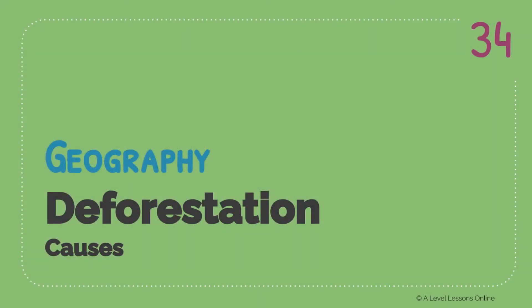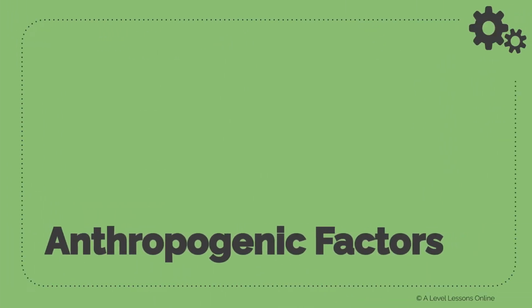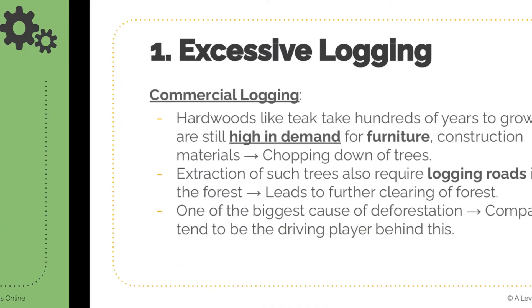Welcome back to A-level lessons. In this video we're going to be looking at deforestation. It's a three-part series looking at physical geography under Theme 1.2, covering the causes, effects, and strategies of deforestation. In this part, we look at the factors or causes of deforestation in today's society — both anthropogenic factors and natural causes. Anthropogenic basically means human-related causes.